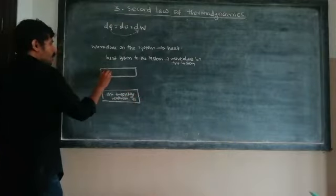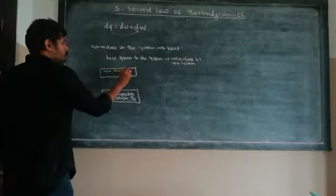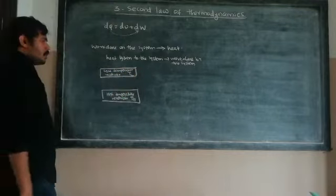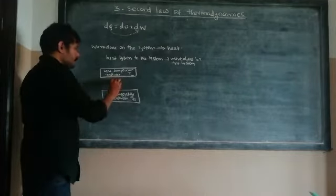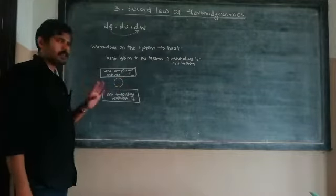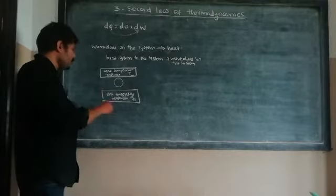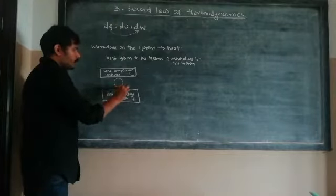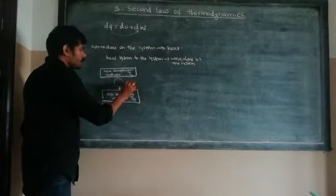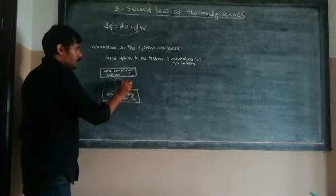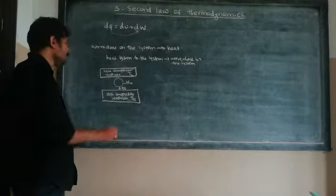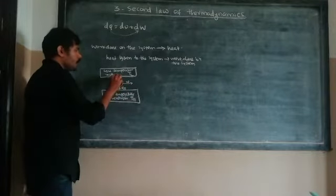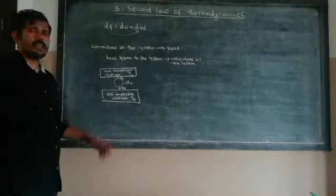Low temperature reservoir with temperature Tl. The machine has a working substance. The working substance interacts with the high temperature reservoir. From the high temperature reservoir, the working substance absorbs heat, and we can get work done by the system.